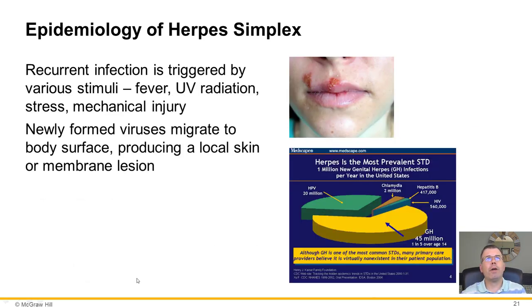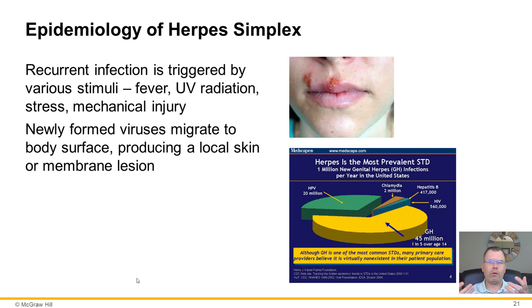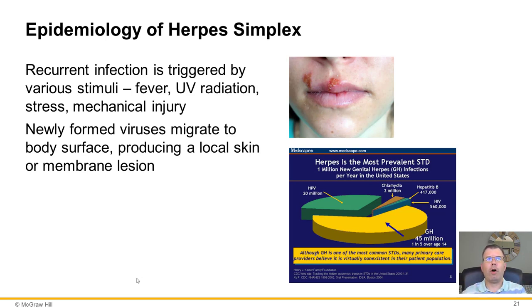These are recurring infections triggered by various stimuli — stress to the body, fever, UV radiation, mechanical injury. Those with herpes often know their triggers and can anticipate outbreaks. What happens is the newly formed viruses migrate to the body surface, producing a localized membrane lesion leading to ulceration of the skin, and the virus oozes out in fluid — that's how it's transmitted. If you have an open case of oral herpes, touching your face and then touching something or someone can spread it.